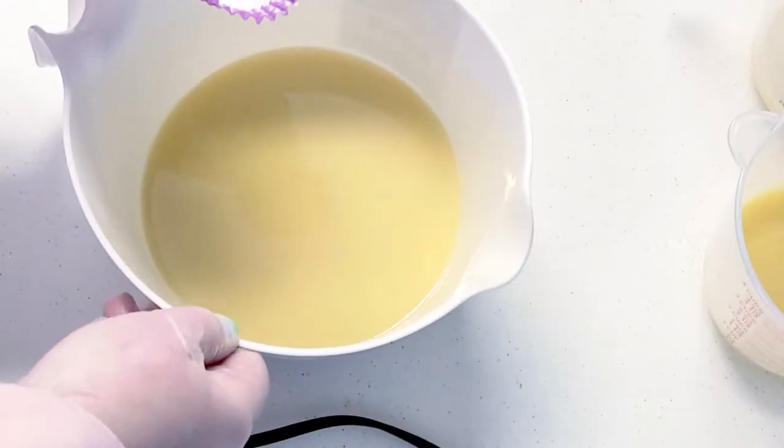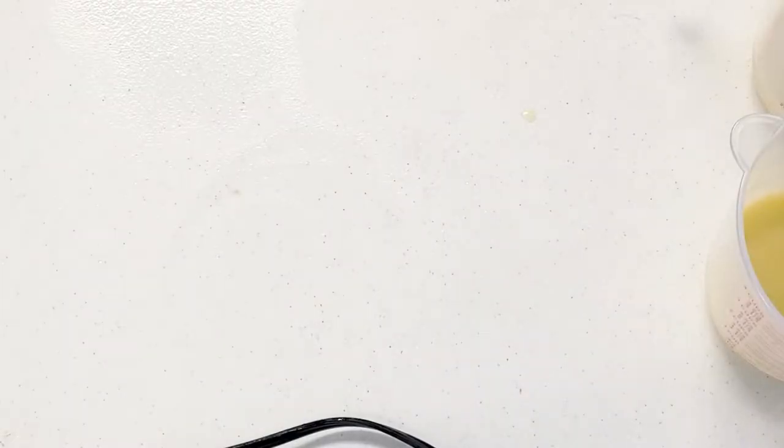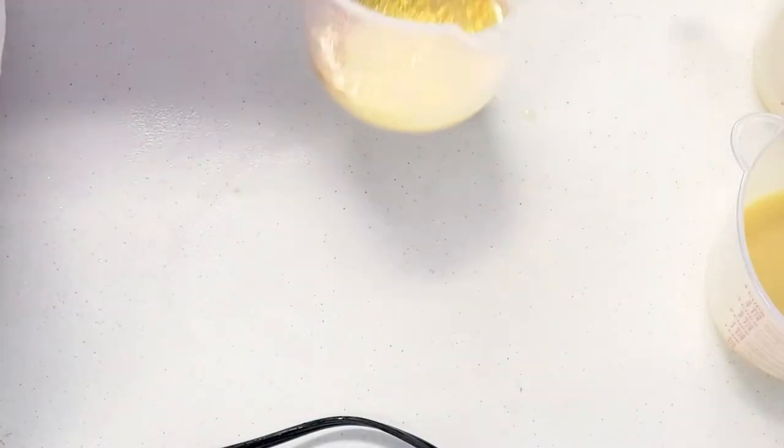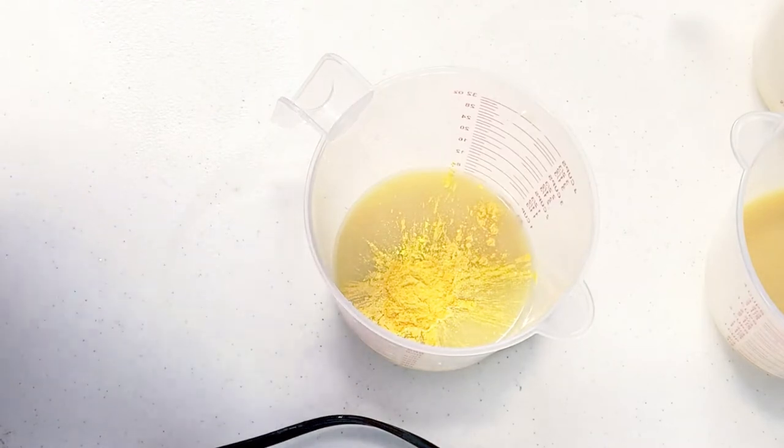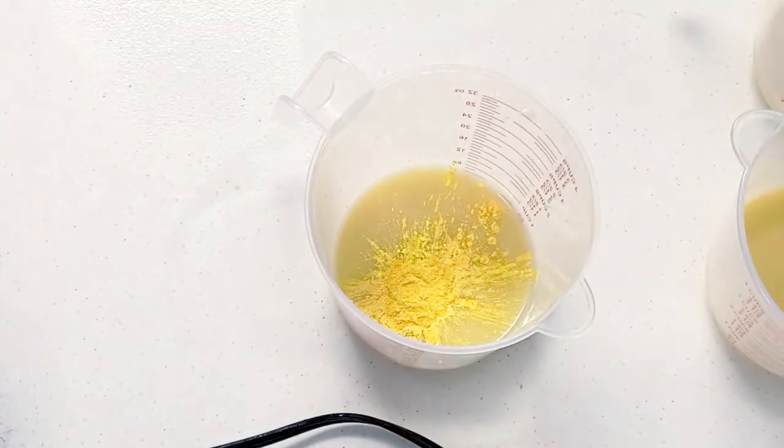Now this is my base. So this is going to be titanium dioxide mixed with water. Okay, I'm going to put my base off to the side. And I already put some yellow in here. This is Yellow Mica from Bramble Berry and Tennis Bowl Breaker from Mad Micas. So there's the yellow.